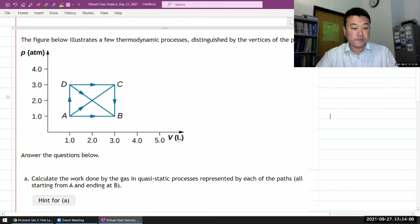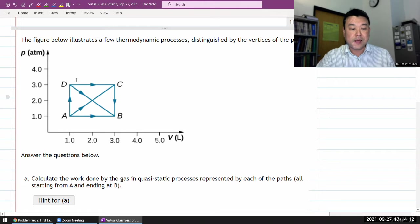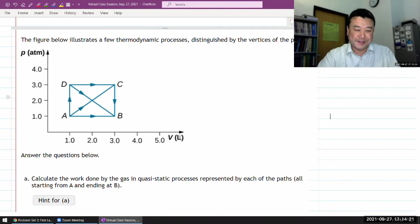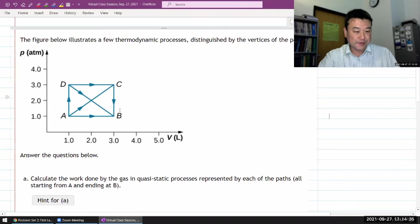And so when you have processes illustrated on a PV diagram, it saves a lot of words that otherwise would be needed to describe the processes going on. So we'll get started just with this figure. The figure illustrates a few thermodynamic processes with these paths that are illustrated here.